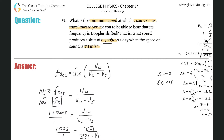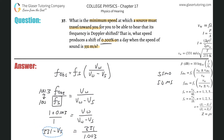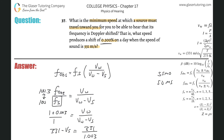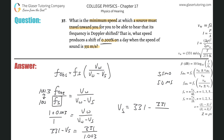Now I do a little cross multiplication — moving terms out of the denominator and into the numerator. I add and subtract terms to isolate the velocity of the source on one side. The velocity of the source equals 331 minus 331 over 1.003.